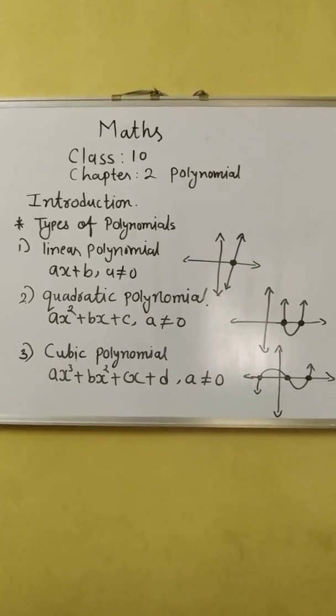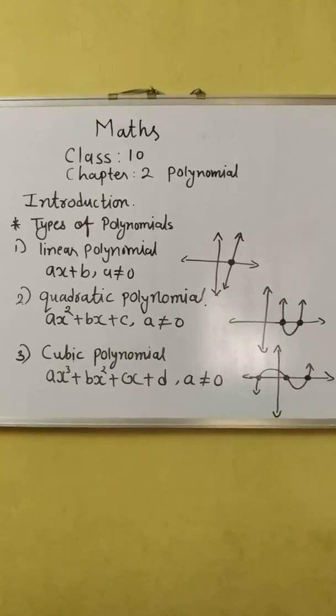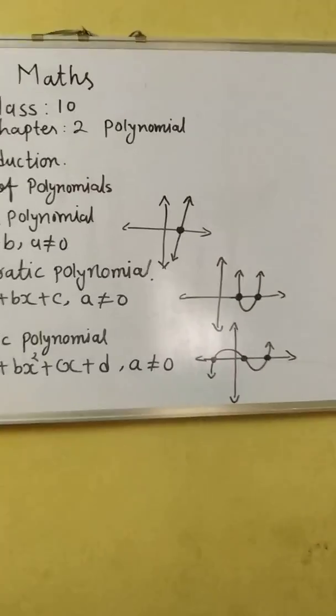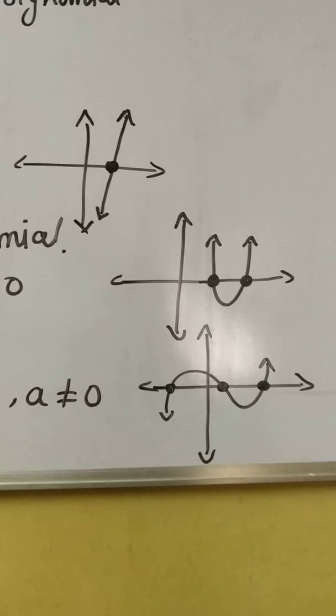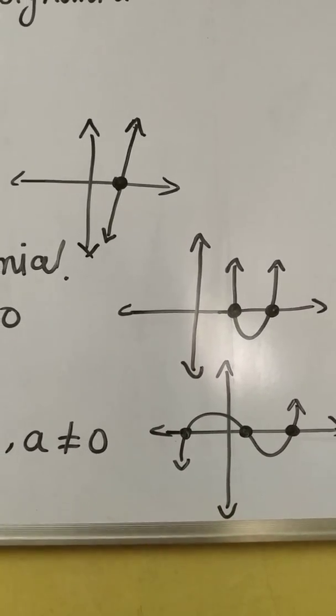So maximum it has three zeros and minimum it can be 0, 1 or 2. Here as we can see the figures that when it is touching x-axis at one time, it has 0 as 1.